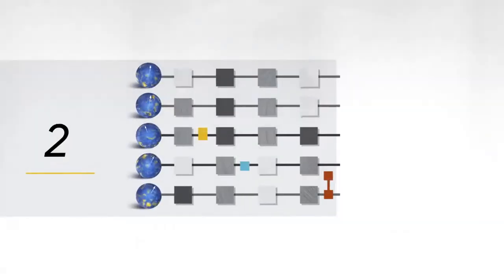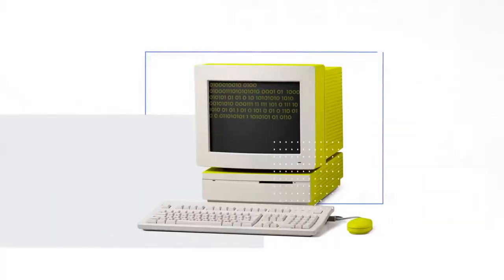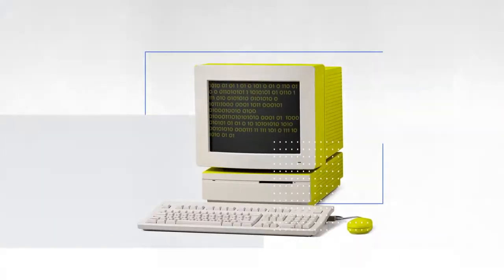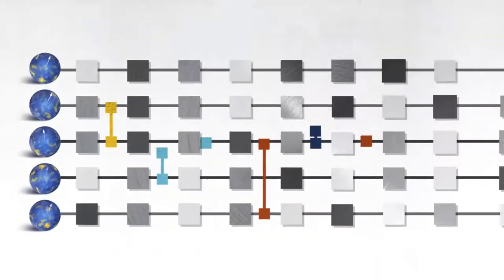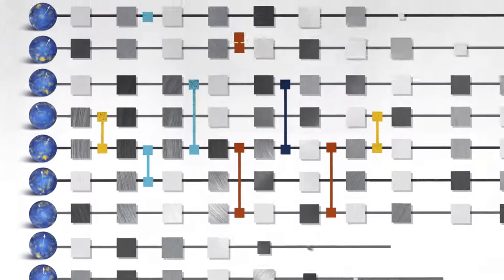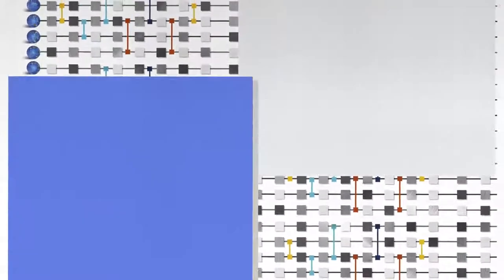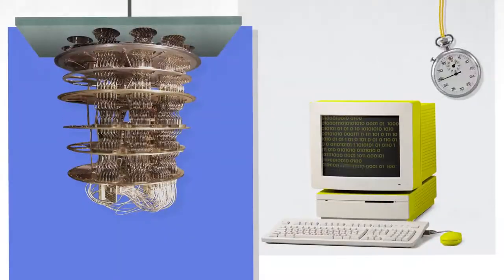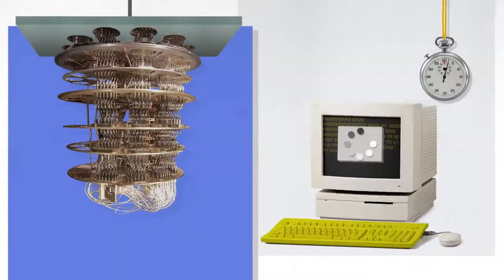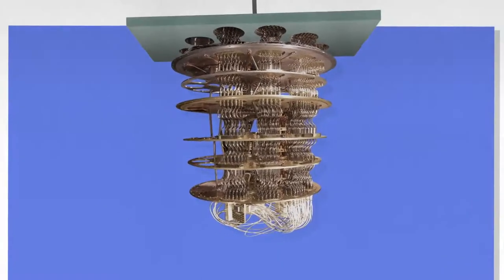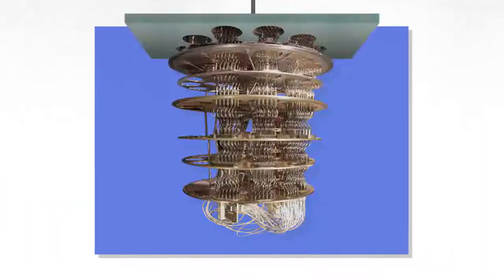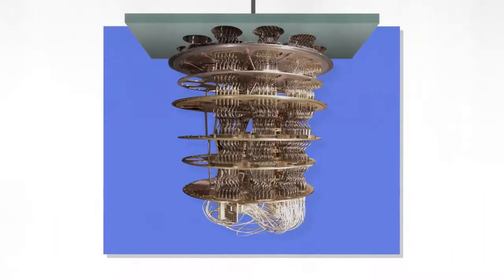To actually demonstrate quantum supremacy we have three steps. First, pick a circuit. Second, run it on the quantum computer. Third, simulate what the quantum computer is doing on a classical computer. We gradually increase the complexity of that circuit, and at some point it becomes completely impossible for the classical computer to keep up. Then we say we've achieved quantum supremacy.